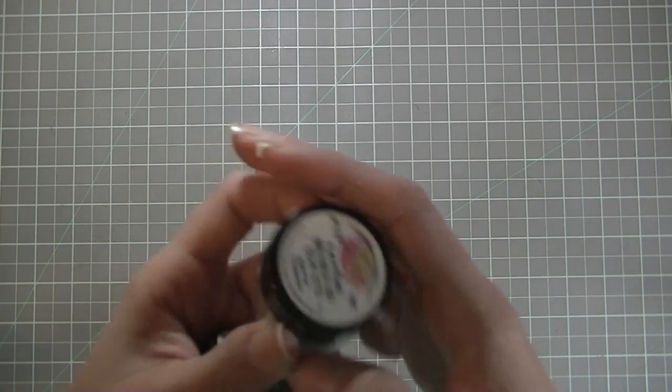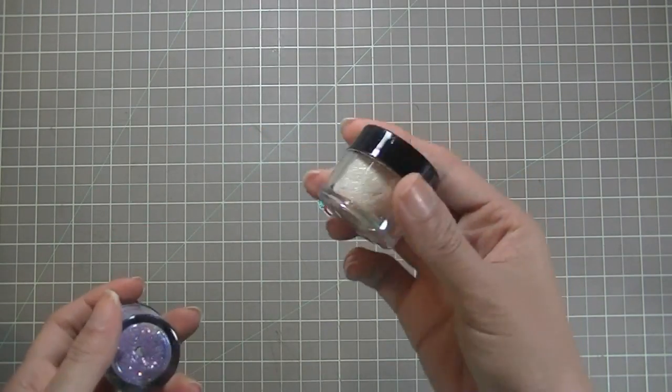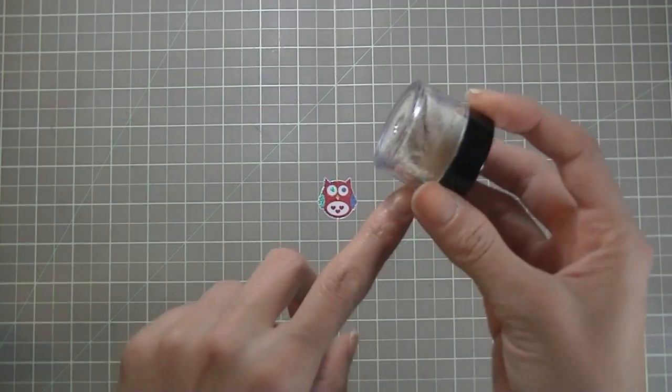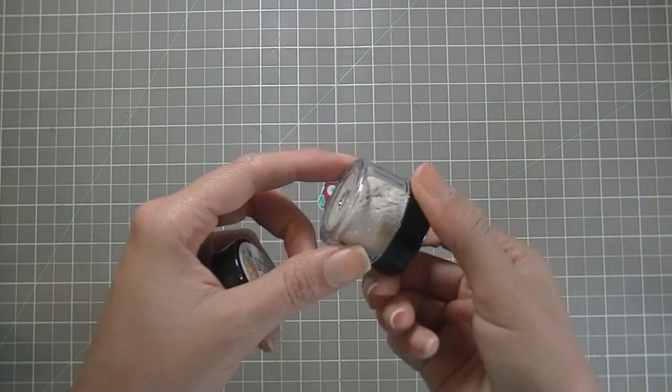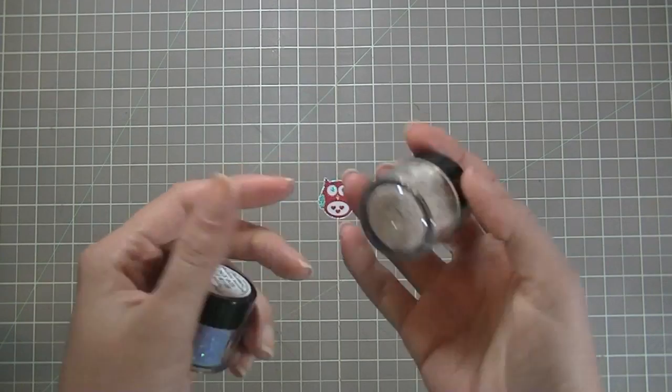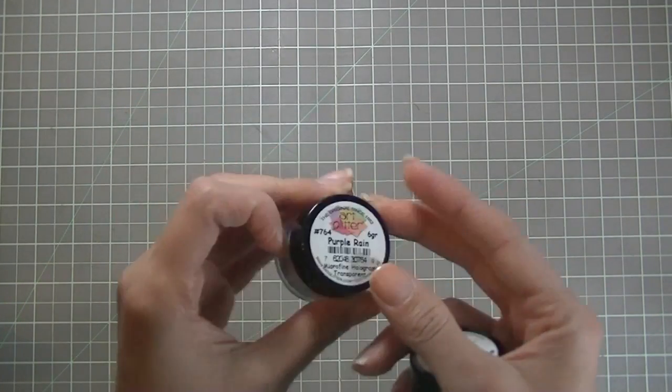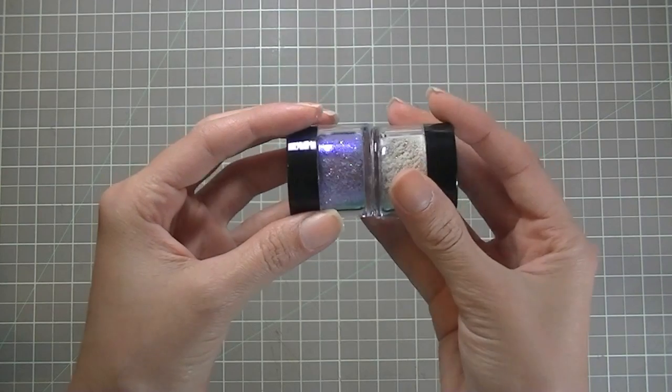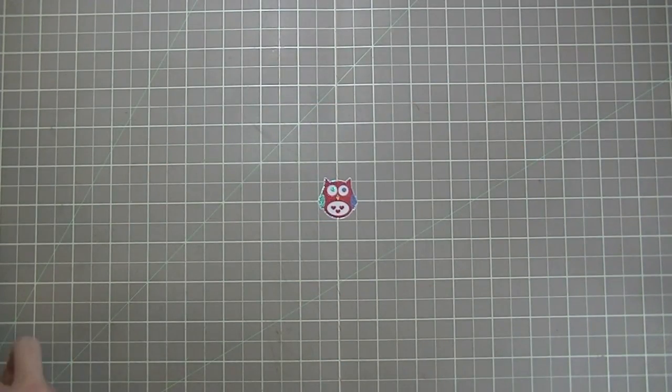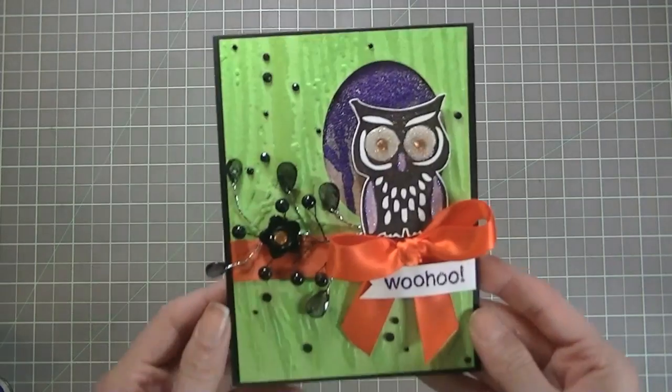I used the color Petrified, which is this nice fine crystal holographic glitter, and then I used the color Purple Rain, which is beautiful. So those were the products that I used for my card that I made, and this is it right here.